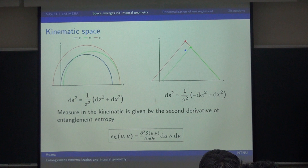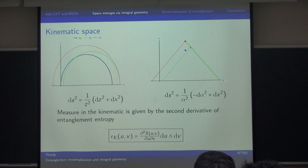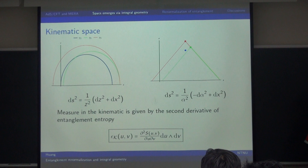We go to the space of all these geodesics, the so-called kinematic space. Every point in this space represents a single geodesic in the original real space. This space has its own geometry, and we need to parameterize some coordinates. Usually we can use the endpoint coordinates; for convenience we can also use the midpoint x and the separation between the two endpoints. This space has a Lorentz geometry, and the metric — more importantly the measure of the volume element — is given by the second derivative of the length of the geodesic.